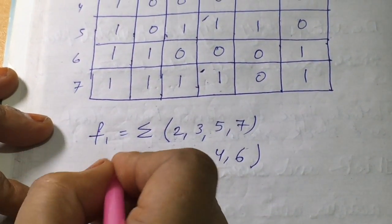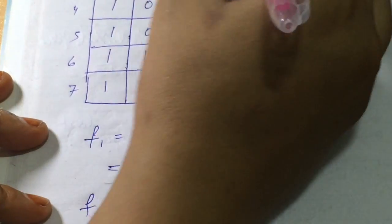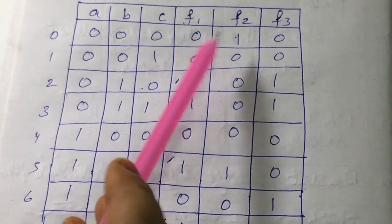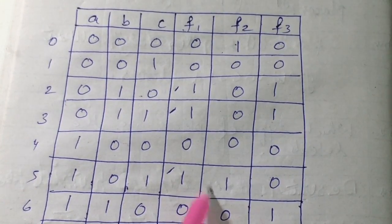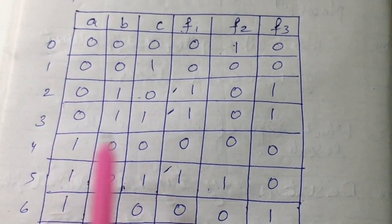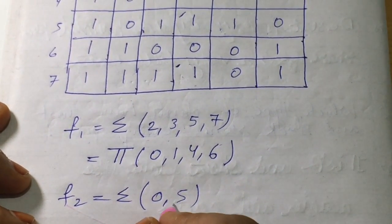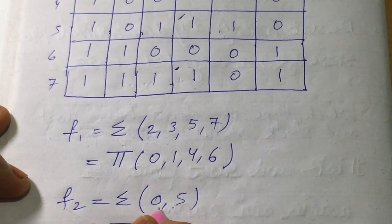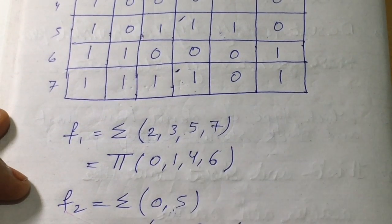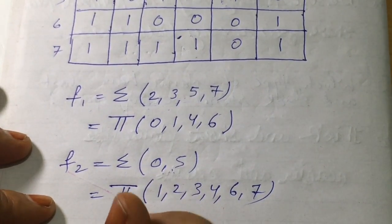For f2, looking at the table, f2 = 1 only at rows 0 and 5. So f2 = Σ(0, 5). For the product of max terms, the remaining rows where f2 = 0 are 1, 2, 3, 4, 6, and 7. So f2 = Π(1, 2, 3, 4, 6, 7).